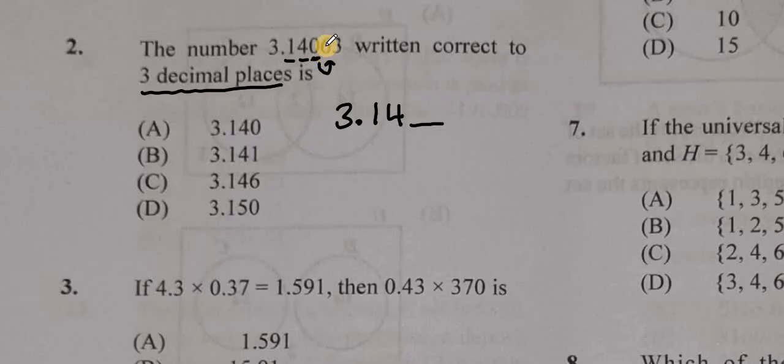Now if this digit, the first of those that we do not want, is 5 or more, we're going to add 1 to this 0 here. If it's less than 5, we'll leave the 0 as 0.